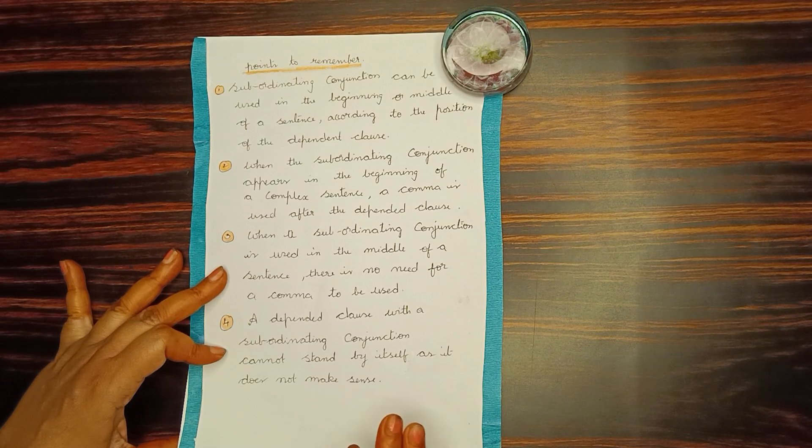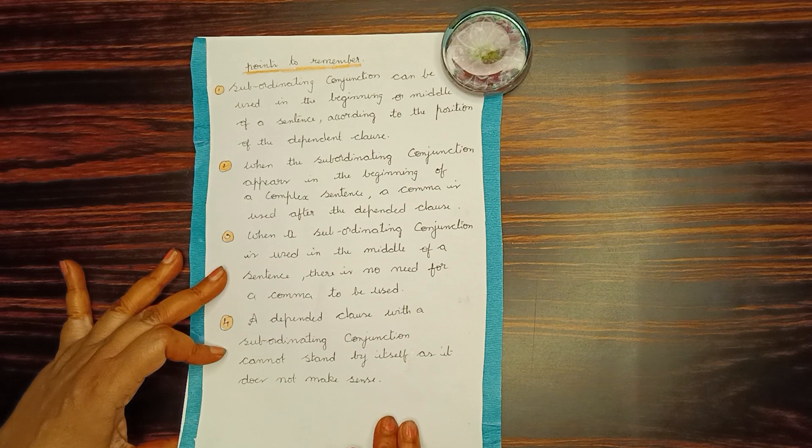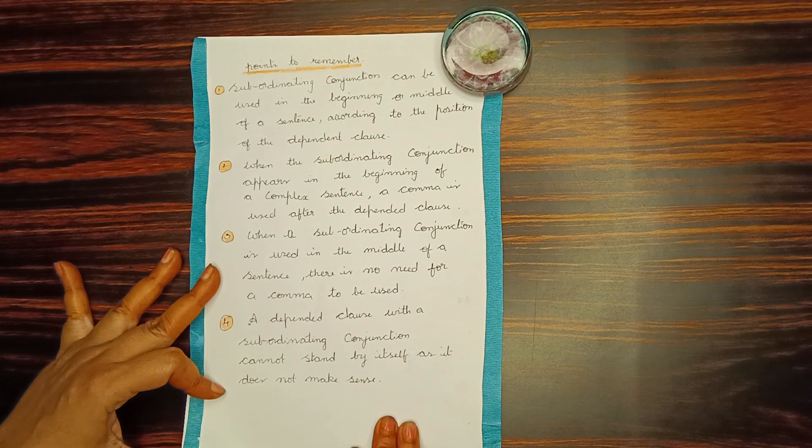Fourth point: a dependent clause with a subordinating conjunction cannot stand by itself as it does not make sense.